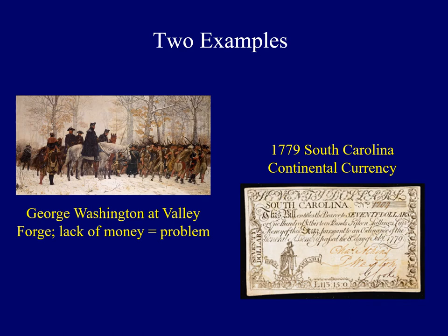One of the problems that George Washington had during the American Revolution was a lack of money, and the supplies and pay for his soldiers were always running short. We see an image of George Washington at Valley Forge, and on the right an example of one state's currency. Could you imagine going from one state to another and having to change your money? Even Europe has the euro today. It was as if we had 13 separate countries as opposed to one United States of America.